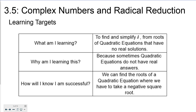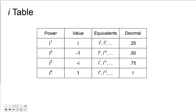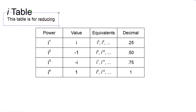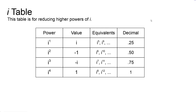We talked about the i table. This table is for reducing powers of i — specifically higher powers of i. As you can see, i to the first has a value of just i. i squared has a value of negative one. i to the third power is the equivalent of negative i.